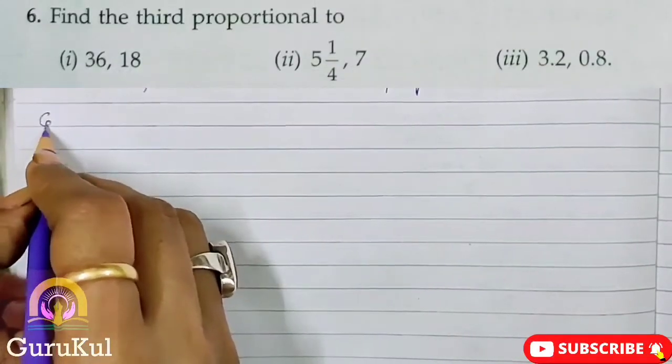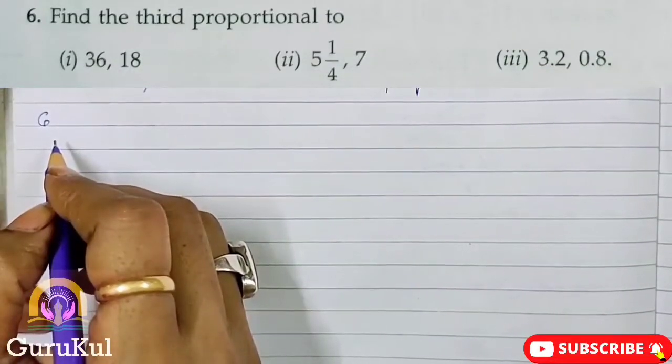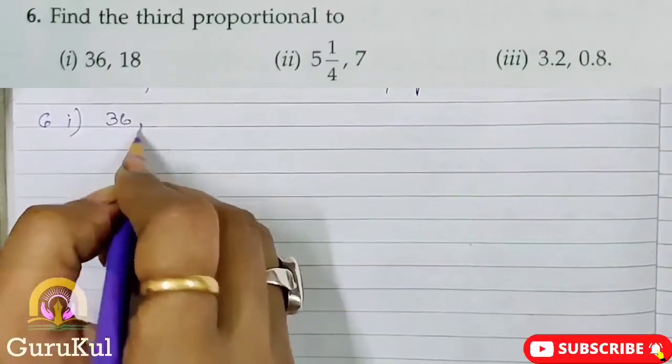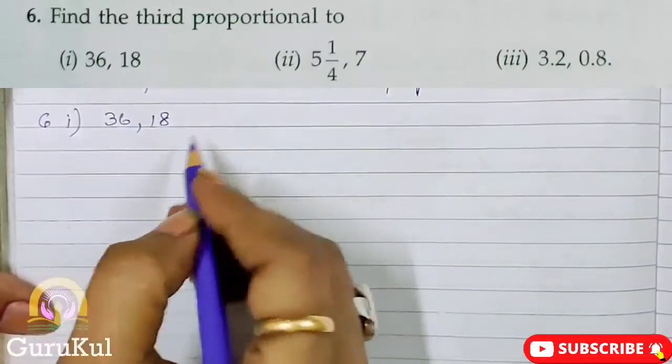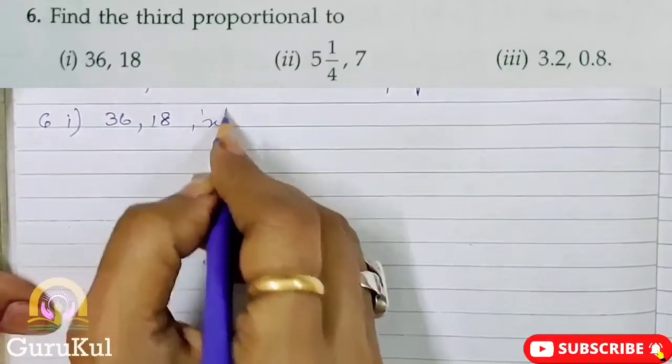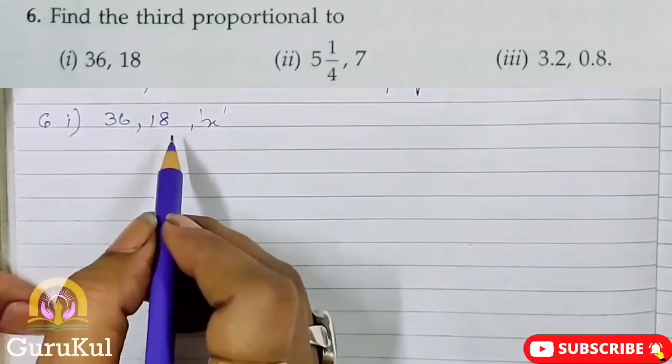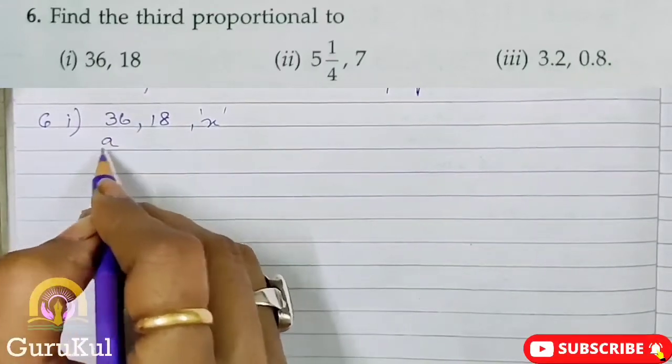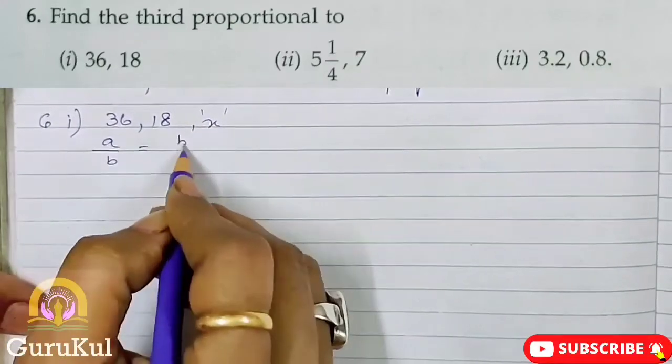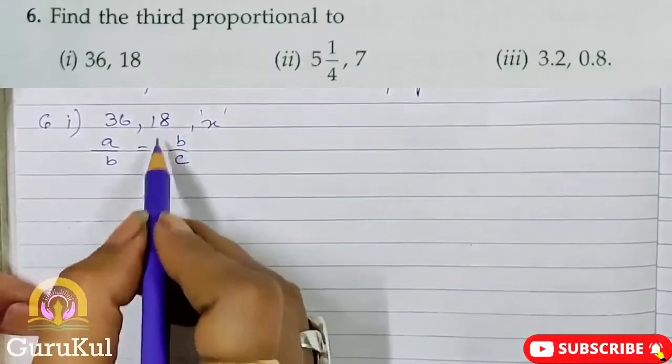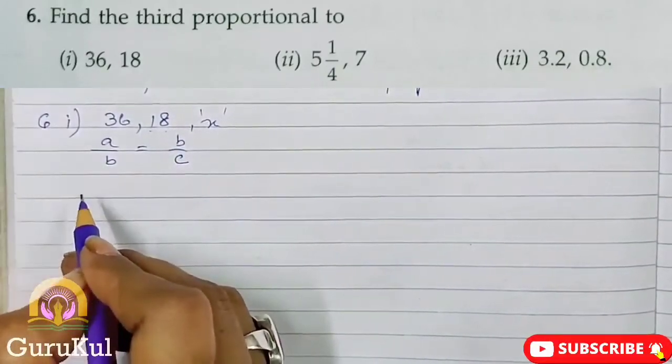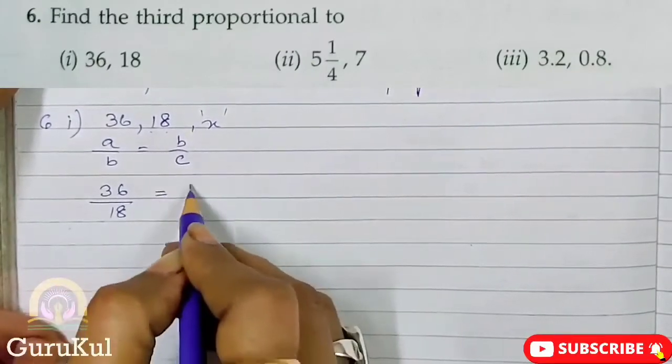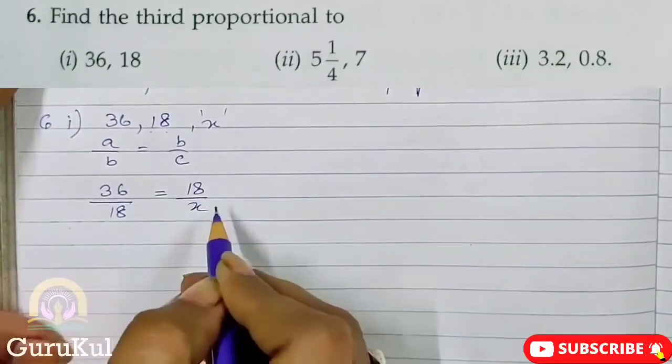Question number 6. We need to find the third proportional to part 1: 36, 18. So let the third proportion be X. The formula is A by B is equal to B by C. So here we have a mid term. So here we have 36 by 18 is equal to 18 by X.